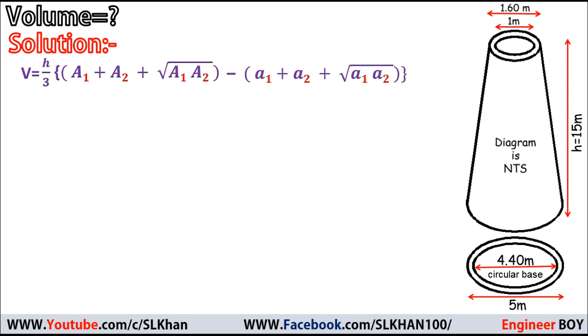Let me calculate A₁. A₁ = πD₁²/4, and I'm going to take D₁ as the big circle at the base having diameter 5 meters. So the area is π(5²)/4, which equals 19.634 square meters.